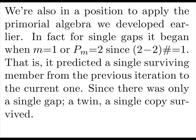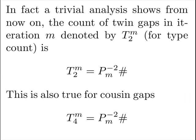We're also in a position to apply the primordial algebra we developed earlier. In fact, for single gaps, it began when M equals 1. That's when the birth of our second minor primorial machinery begins. That is, it predicted a single surviving member from the previous iteration to the current one. And since there's only a single gap, a twin, a single copy survived. In fact, trivial analysis shows, from now on, the count of twin gaps in iteration M, denoted by capital T for type count, is our second minor primorial. This is also true for cousin gaps.